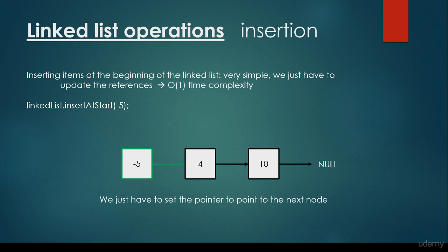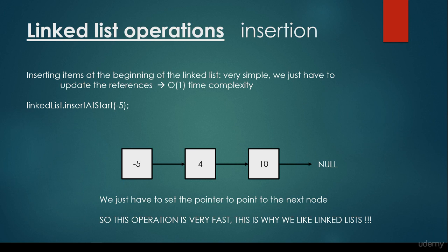So if we are inserting items at the beginning, we just have to set this pointer pointing to the next node, which in this situation is the 4. This operation is very fast and this is why we like LinkedLists. As you may recall, for arrays, if we would like to insert at the beginning — at index 0 — then we have to reconstruct the array. So instead of O(1) time complexity that we have seen for LinkedLists, for arrays it is O(n), so linear time complexity.